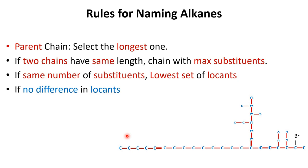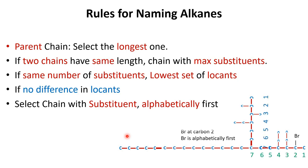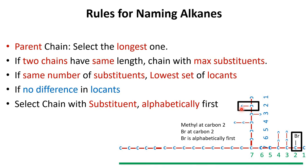If two chains are the same length, have the same number of substituents, and have the same locants, the IUPAC rule says to select the chain that carries the substituent that comes first alphabetically. For example, on the green-numbered chain bromine is at position 2, while on the blue-numbered chain methyl is at position 2. Since B comes before M alphabetically, we select the chain with bromine — this becomes our parent chain, with bromine at position 2.